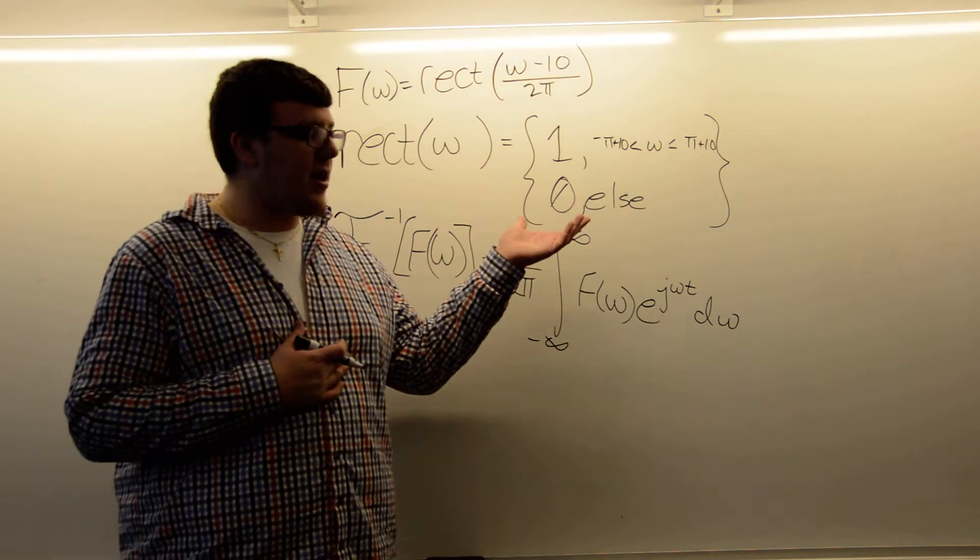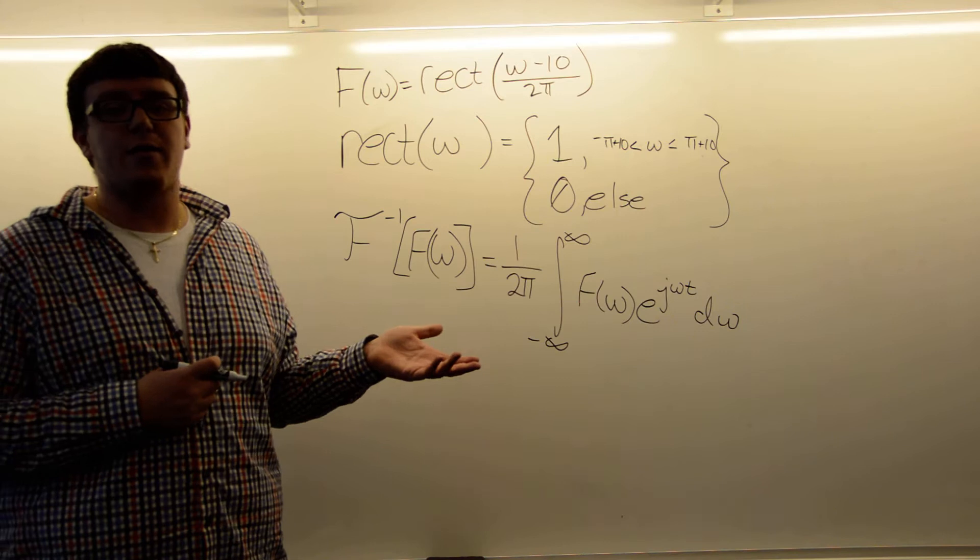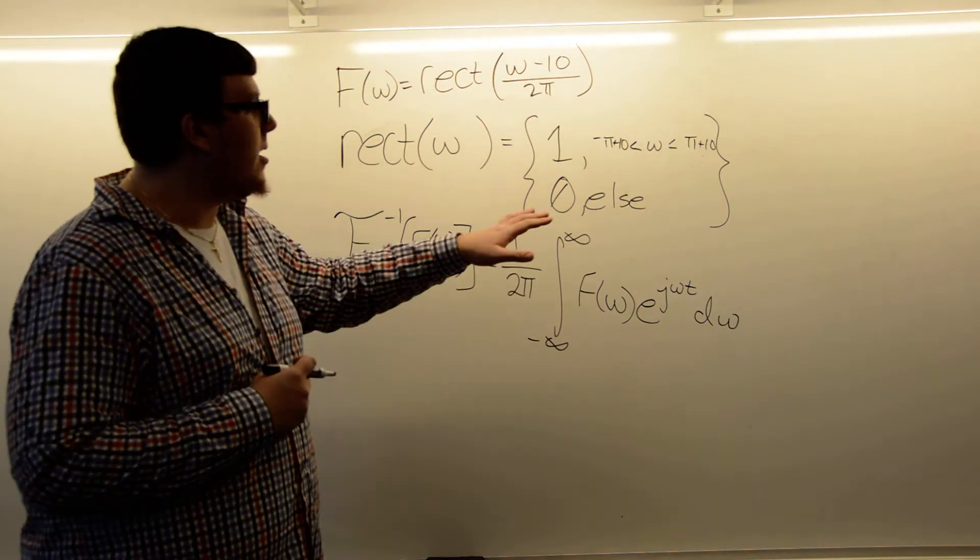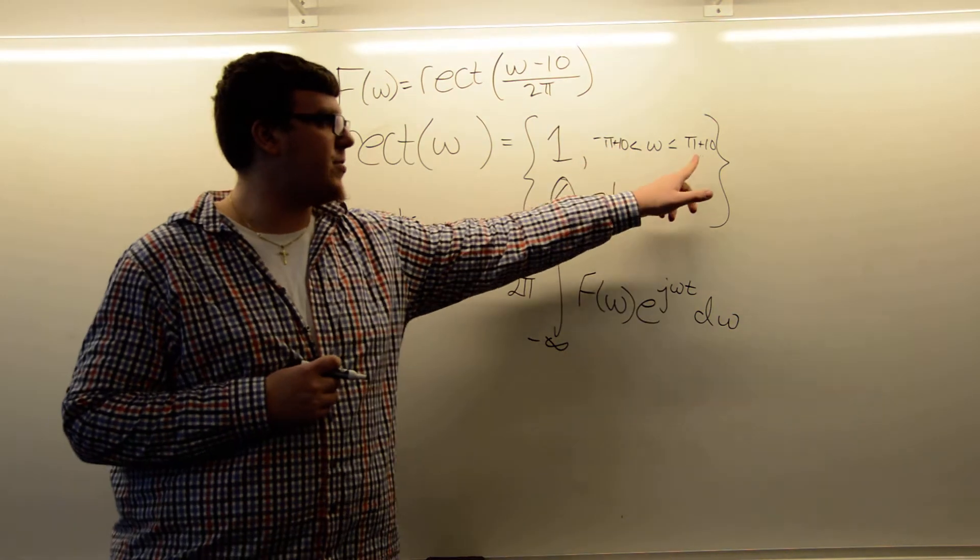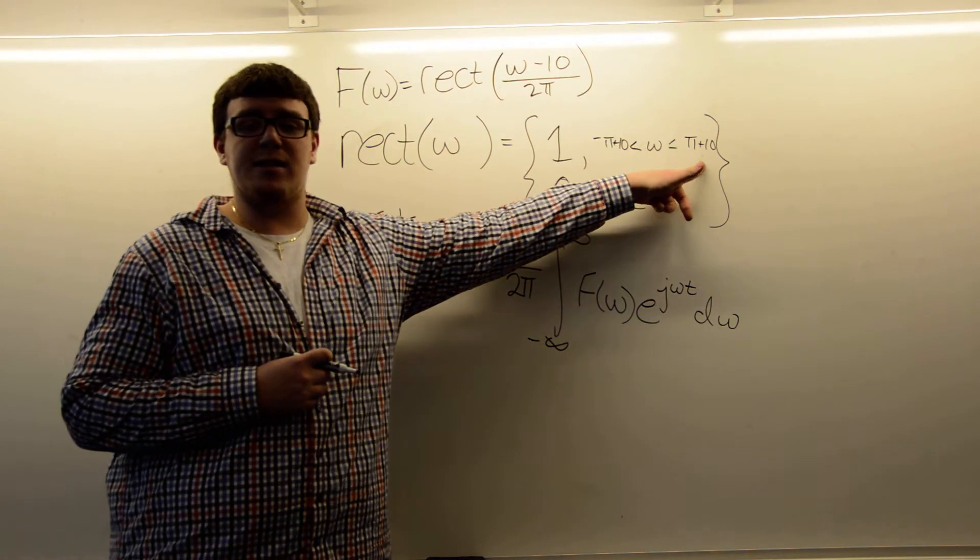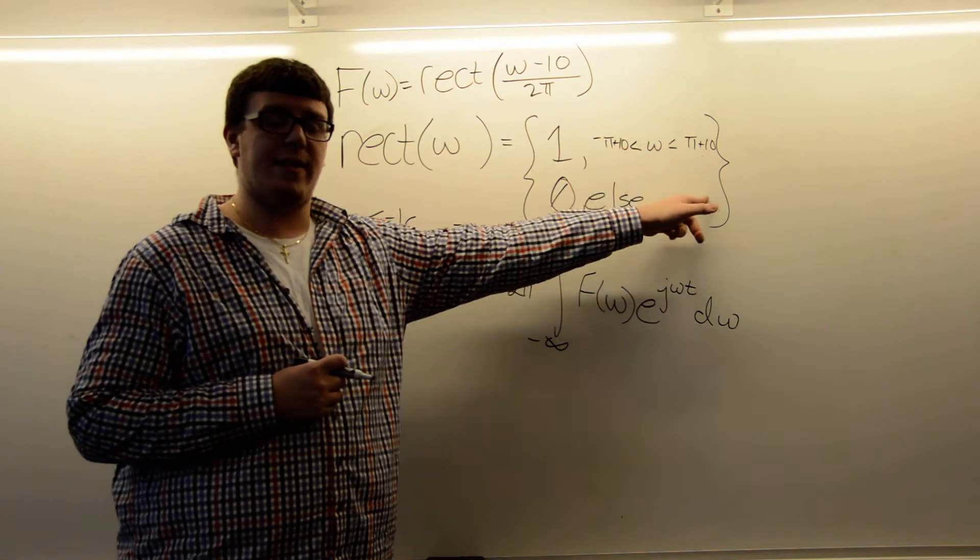Because it's a step function and we know that if we integrate 0, we're just going to get 0, the function from negative infinity to positive infinity only exists within these bounds. So we can instead evaluate the integral at these bounds.